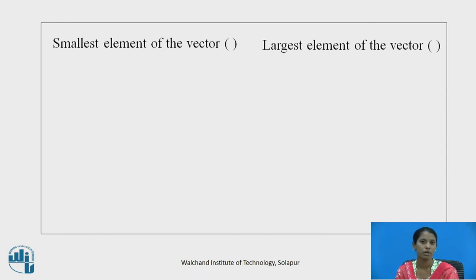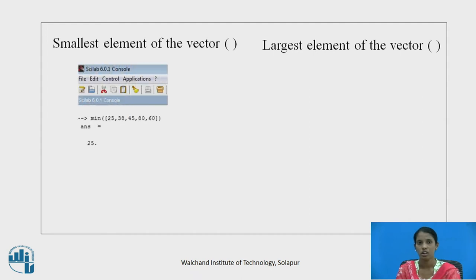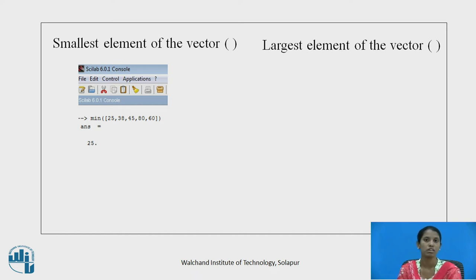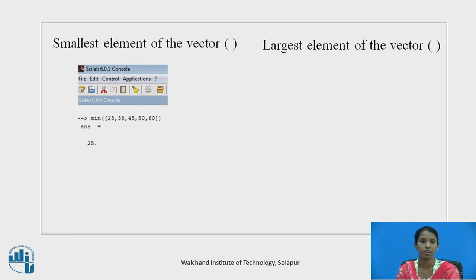The smallest element of a vector can also be found out using the statistical function MIN. For vector [25, 38, 45, 80, 60], the minimum value found using function MIN is 25, because 25 is the smallest element in the vector.